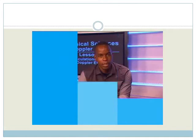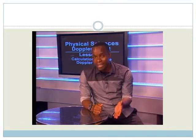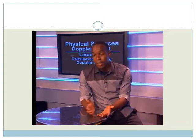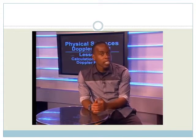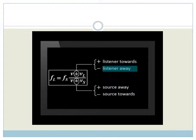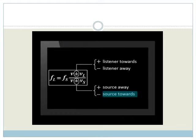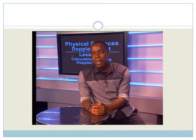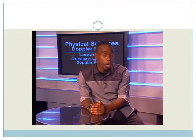In these examples, we have calculated the observed frequency for different situations. Notice from the calculations that the plus and minus signs can change in the equation, depending on the movement of the listener and the source. The positive direction is always towards the source. The velocity of the listener is positive when the listener moves towards the source and negative when the listener moves away. The velocity of the source is positive when the source moves away from the listener and negative when the source moves towards the listener.